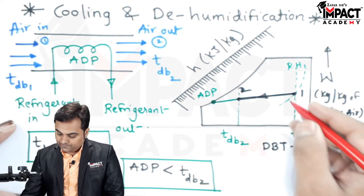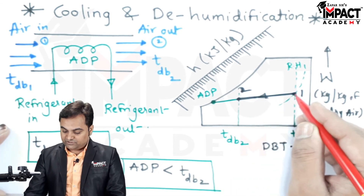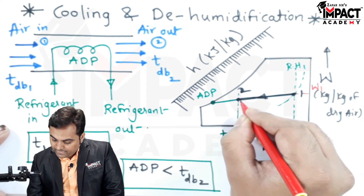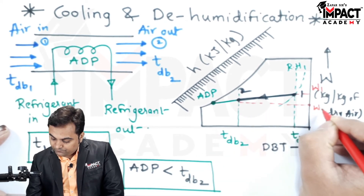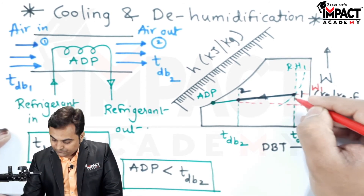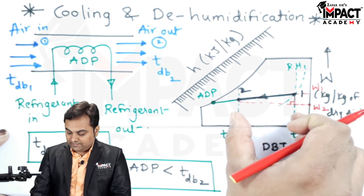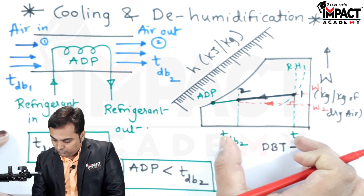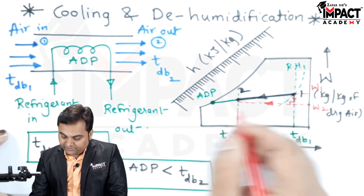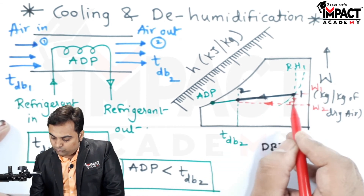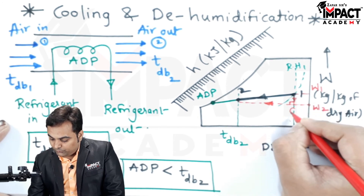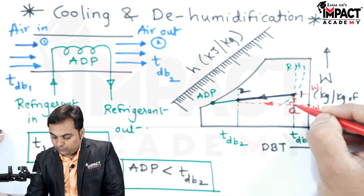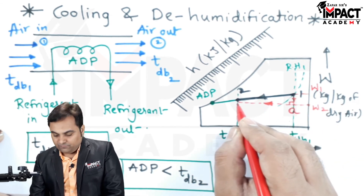We can see that the temperature of the air is reducing from dry bulb temperature one to dry bulb temperature two. At the same time the moisture content is reducing — at point one the moisture content was W1, at point two it is W2, so there is a difference of W1 minus W2. The decrease in temperature is Tdb1 minus Tdb2. We can also say that the cooling and dehumidification process consists of two sub-processes: from point one to point A is the dehumidification process where moisture is removed from W1 to W2, and from point A to point two is the cooling of air.